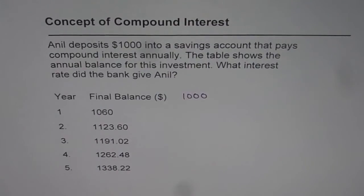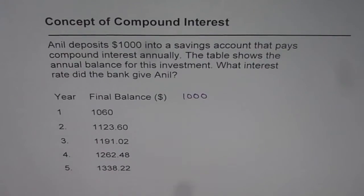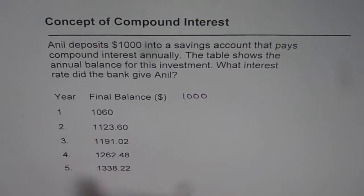What we need to find here is the interest rate that the bank is giving. How do we find this compound interest rate? One way is we can find the ratio in which the money is growing. Since compound interest grows geometrically, this is a geometric progression, which means there has to be a constant multiplier. So let's find the ratio in which the money is growing.